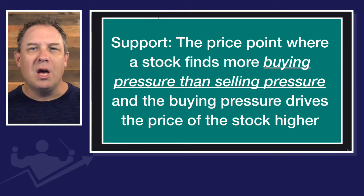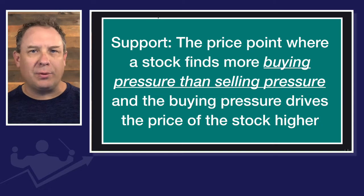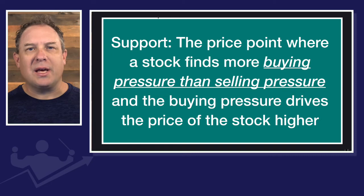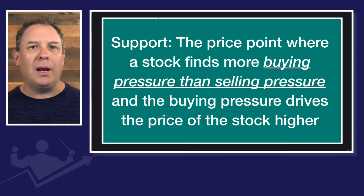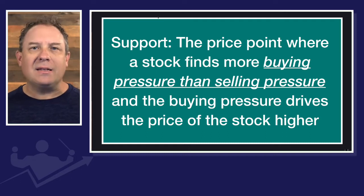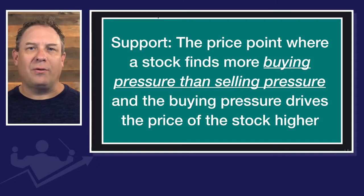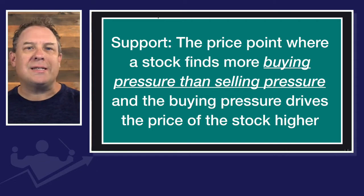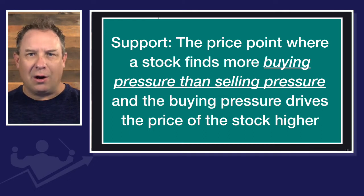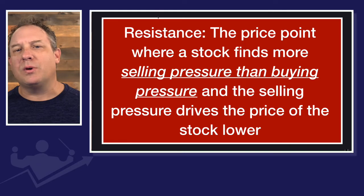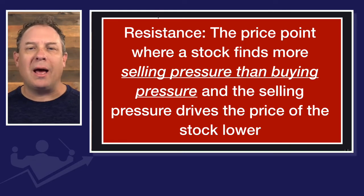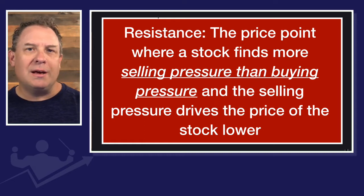So the first thing is, let's define terms. Support is the price point where a stock finds more buying pressure than selling pressure. You can apply this directly to crypto — it applies exactly the same to Forex, to futures, or anything that you are trading. An issue finds more buying pressure than selling pressure, and the buying pressure drives the price higher. That's going to be your support area. Resistance is the opposite — it's the price point where a trade finds more selling pressure than buying pressure, and the selling pressure drives the price lower.